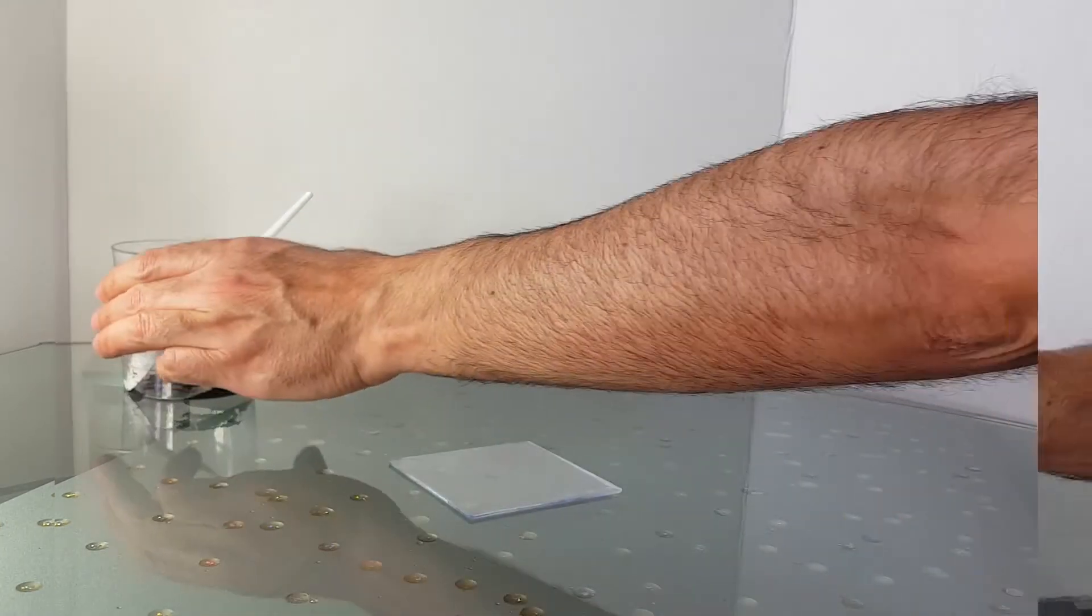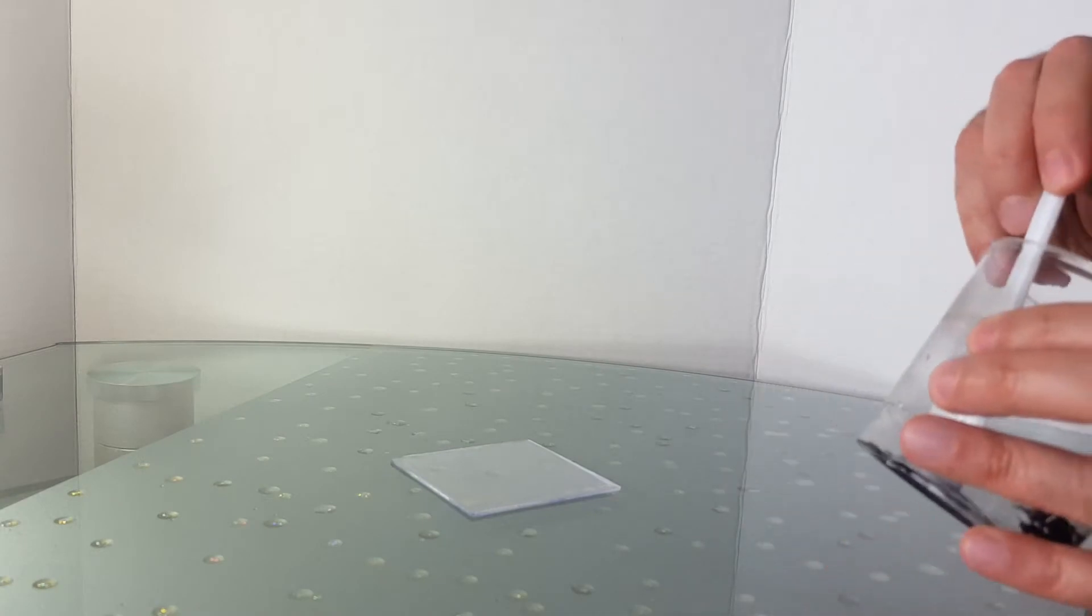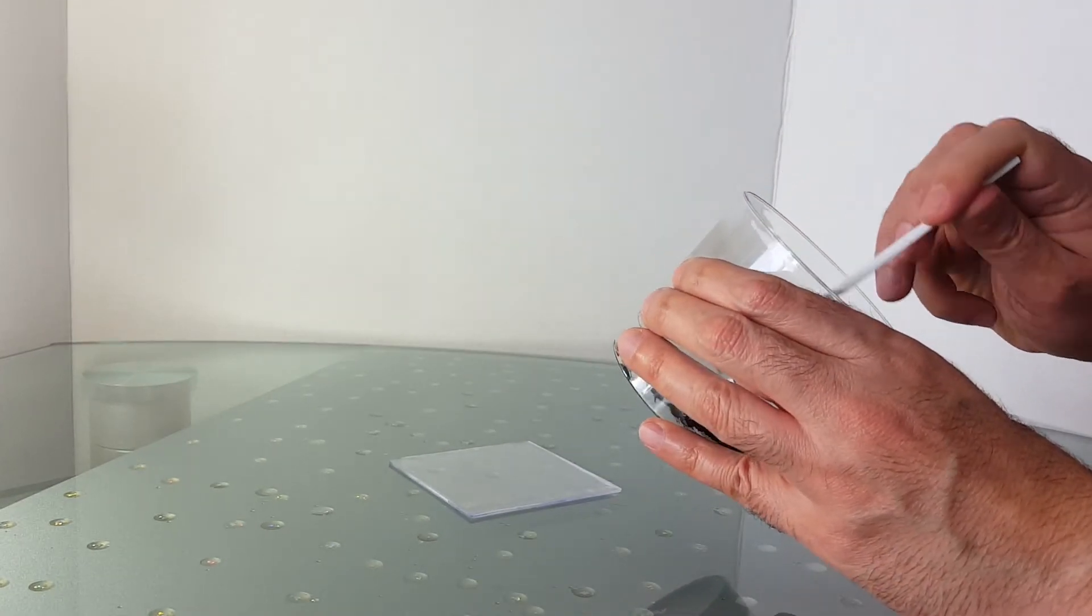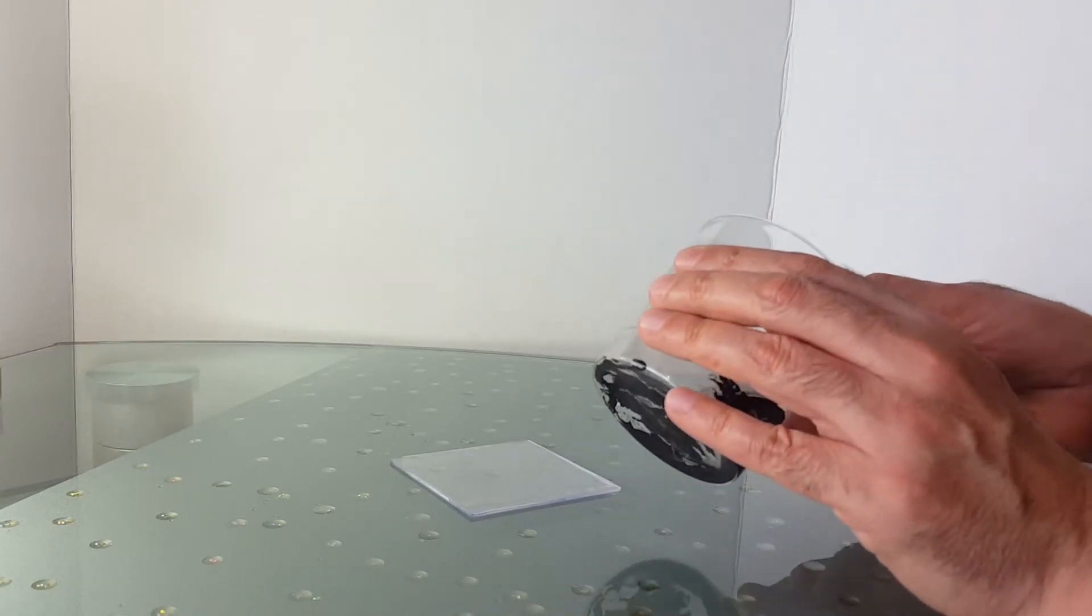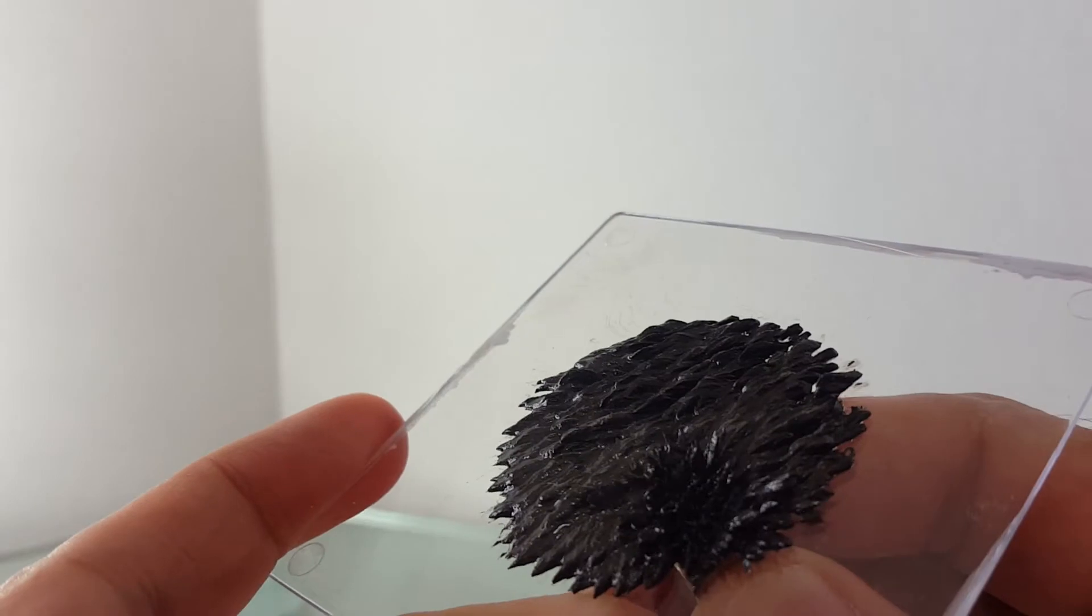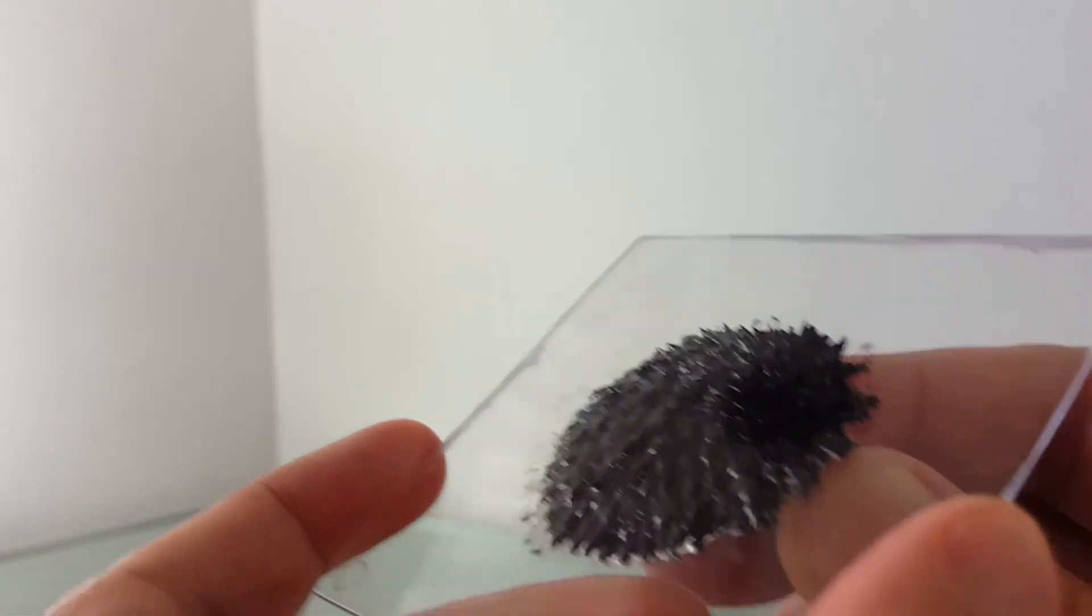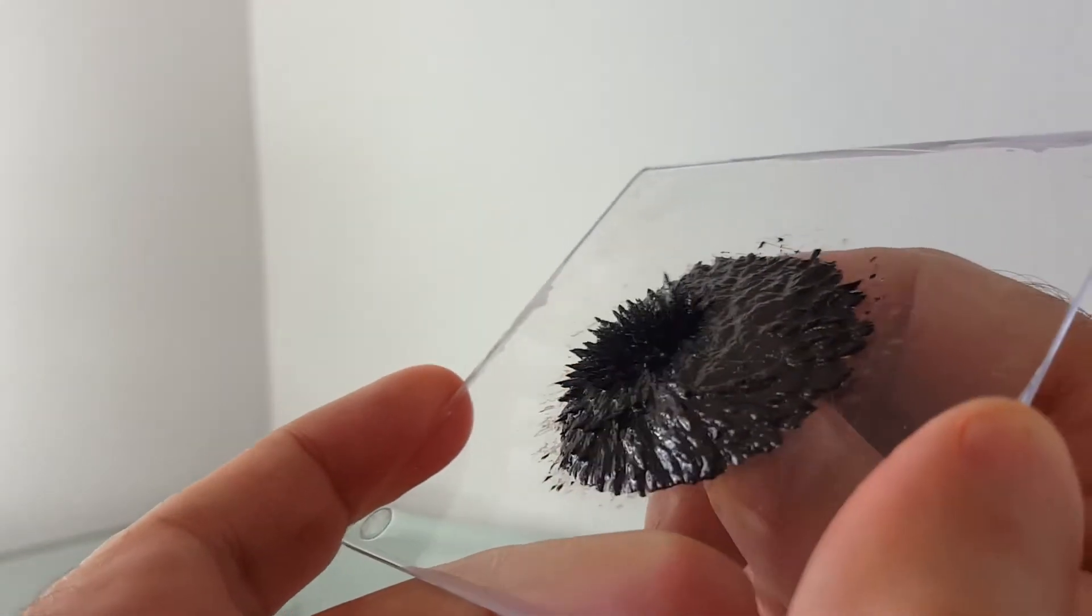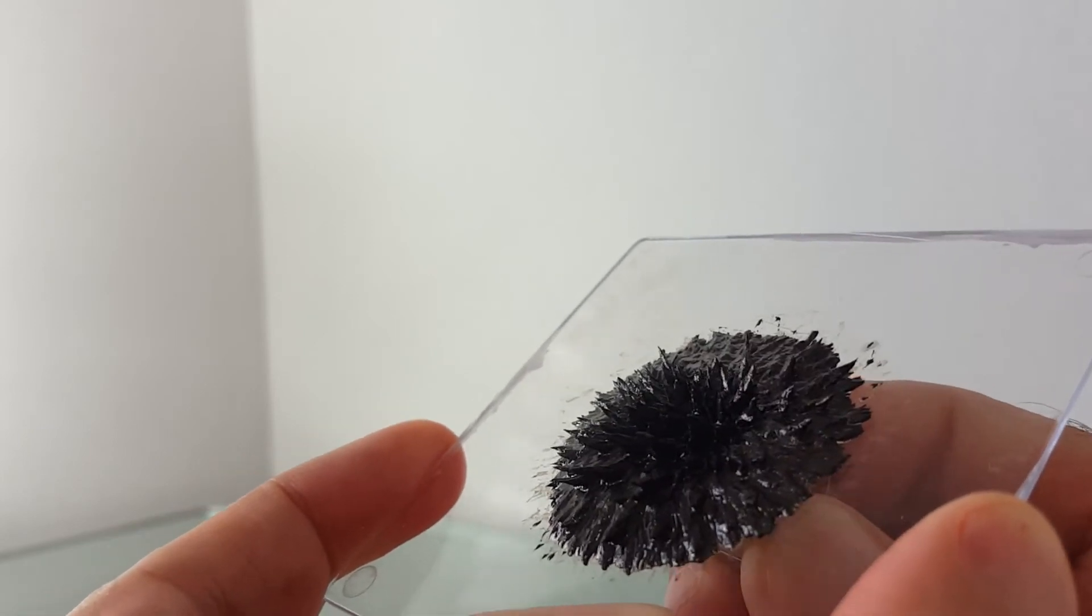Now before it gets dried up, let's do a fun experiment with it. Let's take some of it and put it on a plexiglass or anything similar as long as it's non-magnetic, and have some fun with visualizing the magnetic lines.